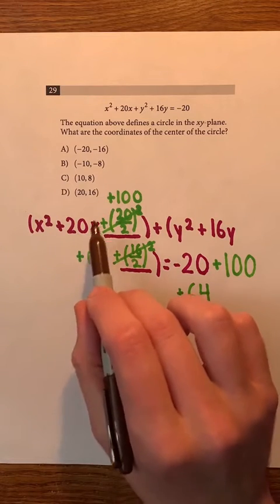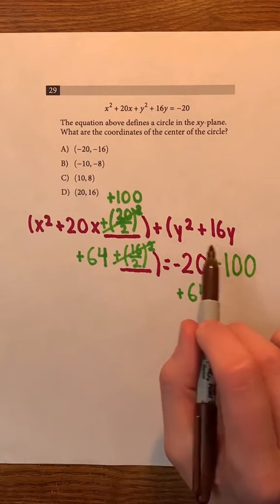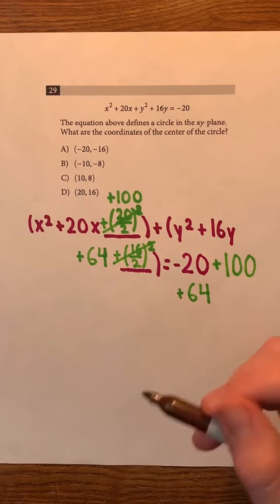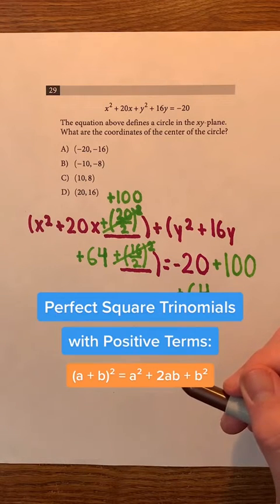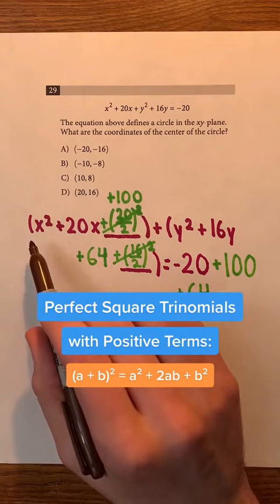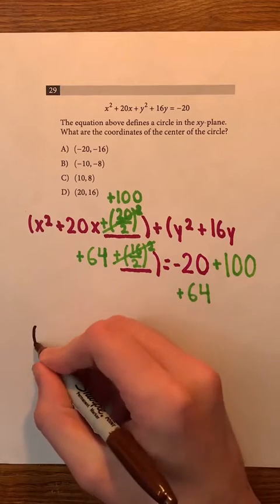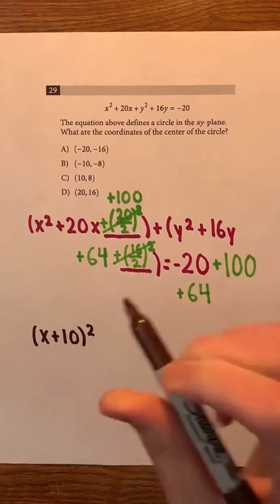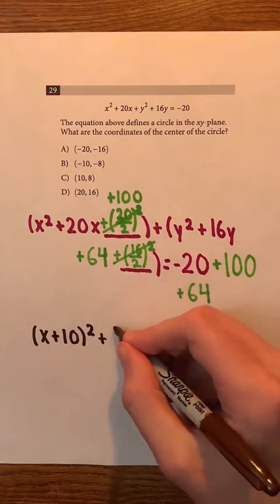Now, notice that x squared plus 20x plus 100, and y squared plus 16y plus 64 are perfect square trinomials with positive terms. So, we can factor the first perfect square trinomial as x plus 10 squared, and the second one as y plus 8 squared.